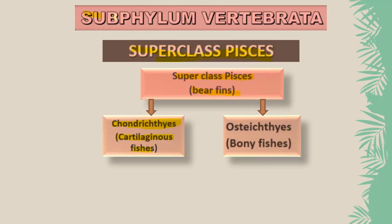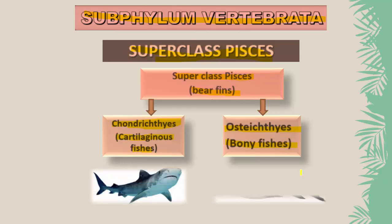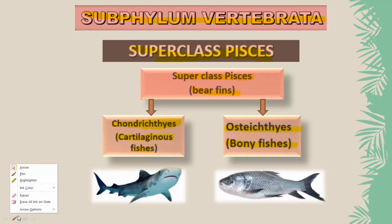Superclass Pisces is divided into Chondrichthyes and Osteichthyes. Osteichthyes means bony fishes — their endoskeleton is made up of bones. This image shows examples of both a cartilaginous fish, such as a shark, and a bony fish where the endoskeleton is made up of bones.